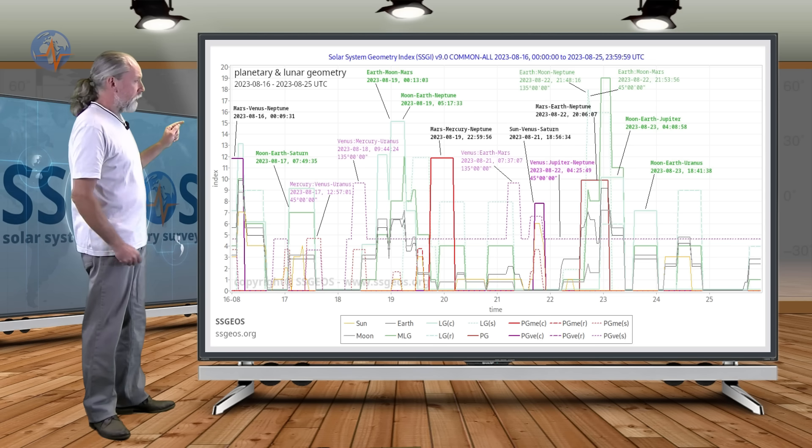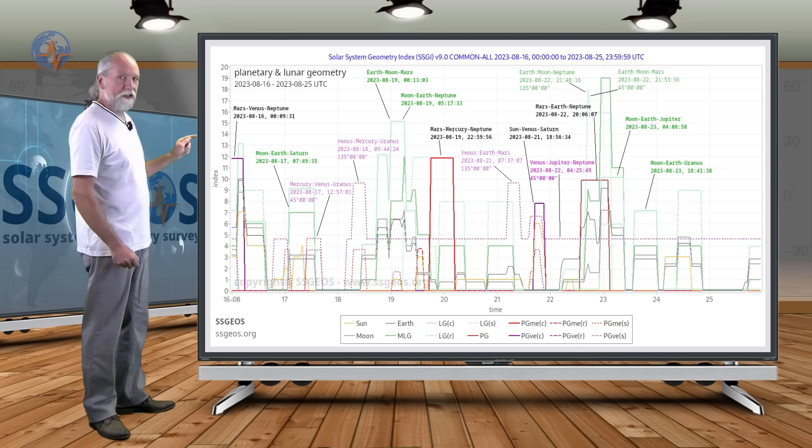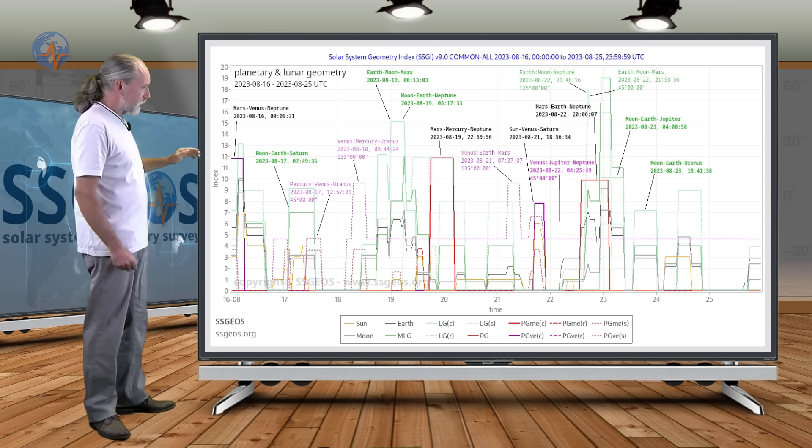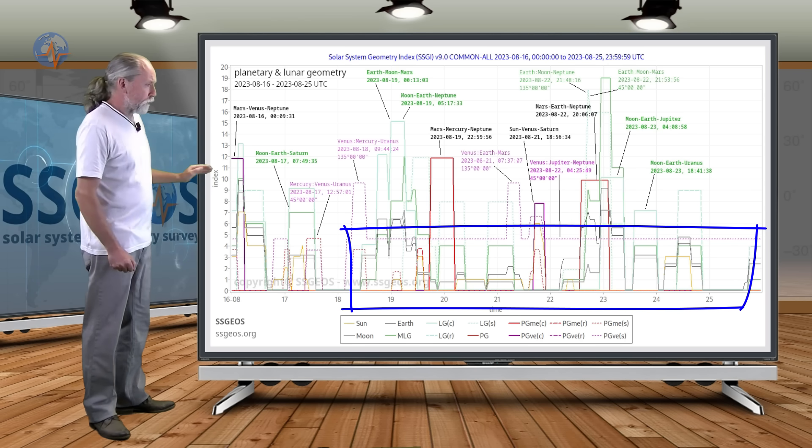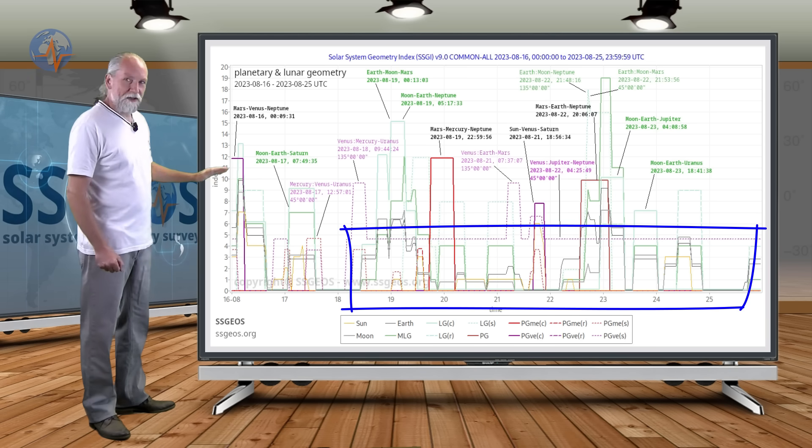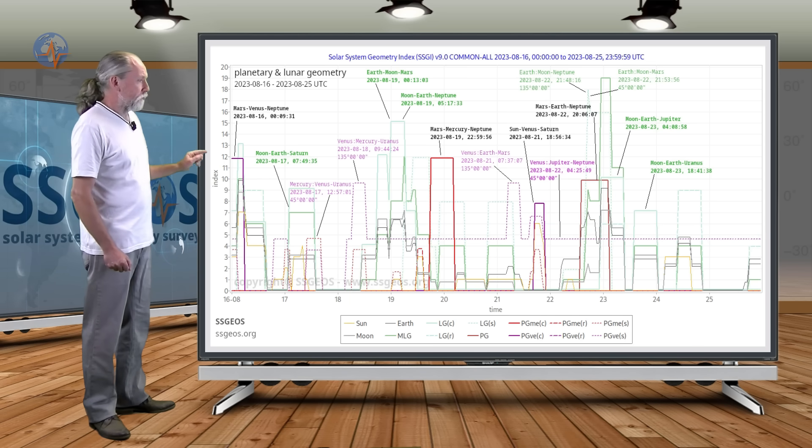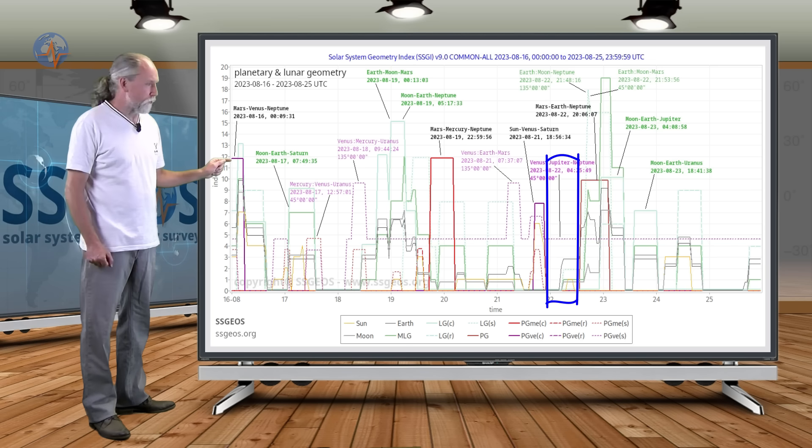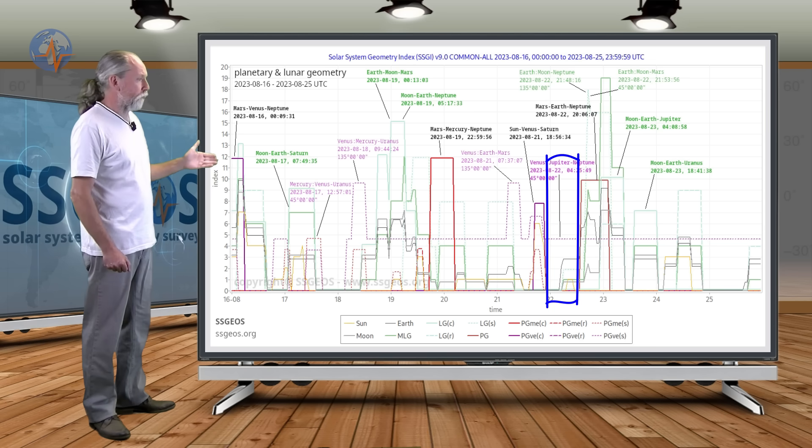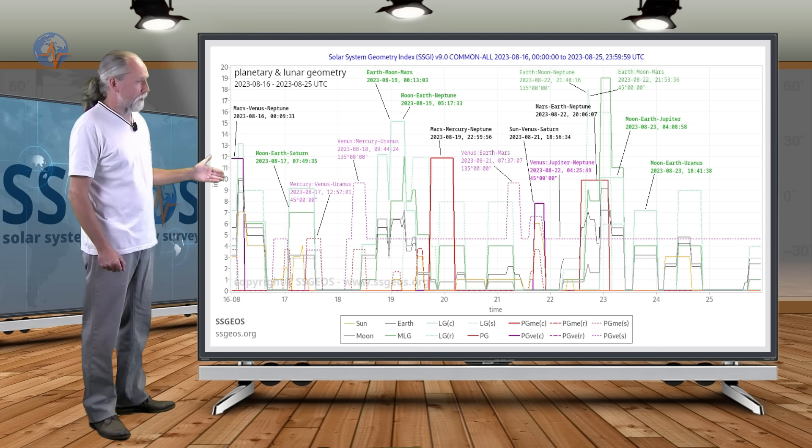We also see the purple labels here that is geometry with Venus. And you see here at the bottom of the SGI graph the dotted lines extended actually. And that is because Venus will be making 45 angle geometry with Jupiter and Neptune. And that will be exact on the 22nd in early morning of the 22nd.